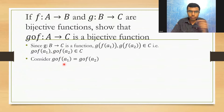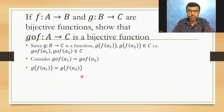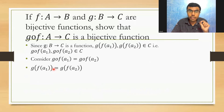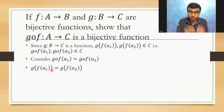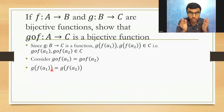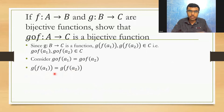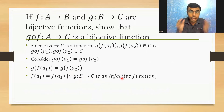Now consider g∘f(a1) = g∘f(a2), which I can write as g(f(a1)) = g(f(a2)). I know that g:B→C is an injective function. An injective function means that for every element there is a unique image, and for every image there is a unique element in the domain. So if the images are the same, the elements must also be the same. Therefore, f(a1) = f(a2), since g:B→C is an injective function.